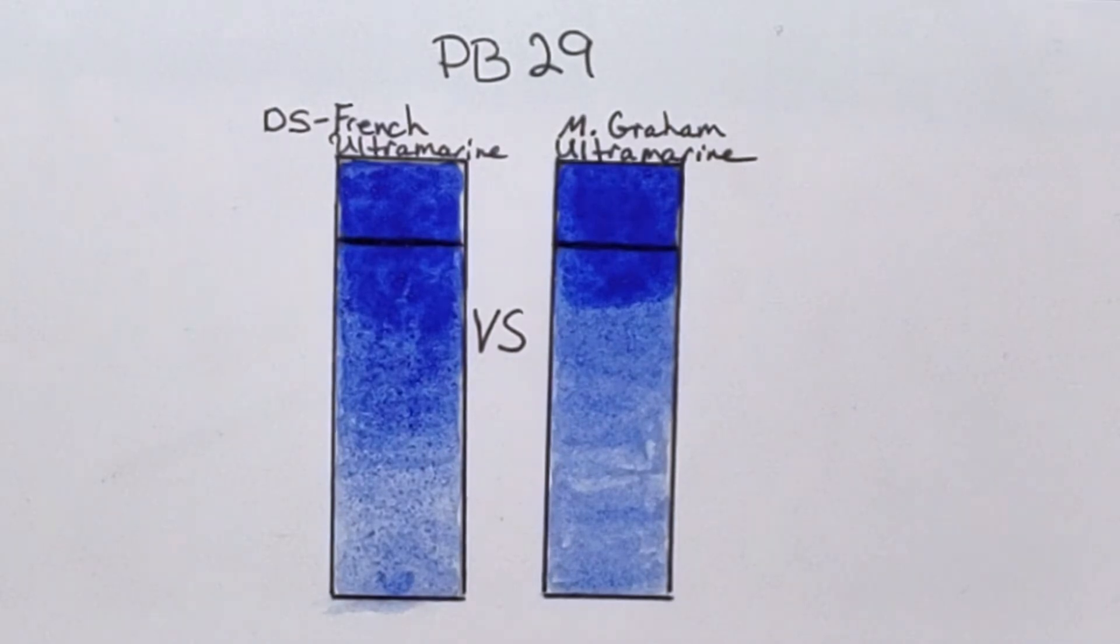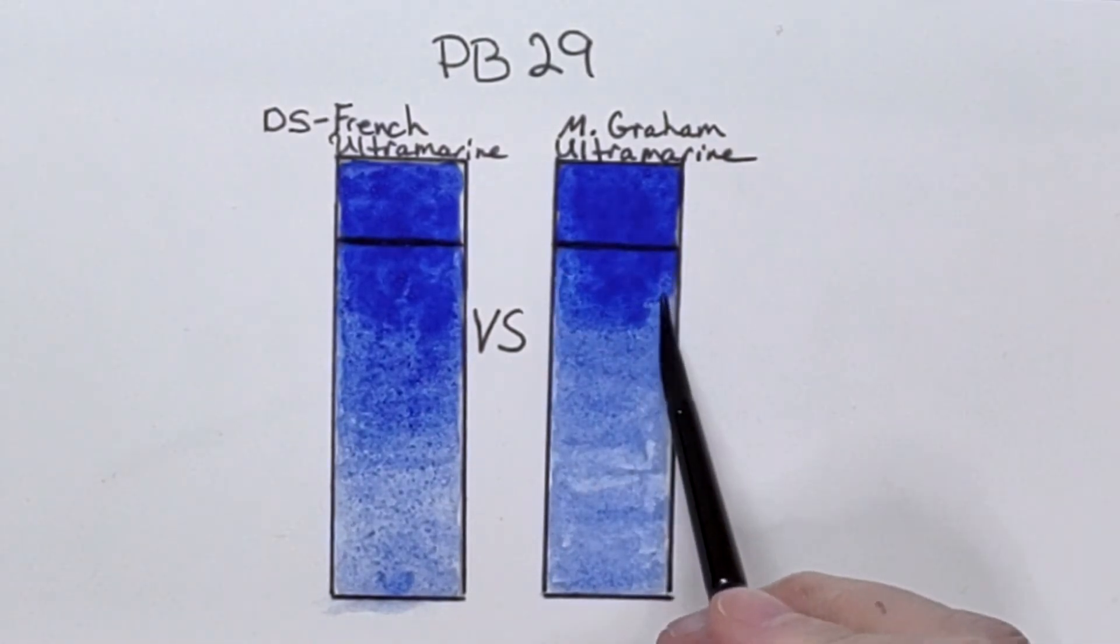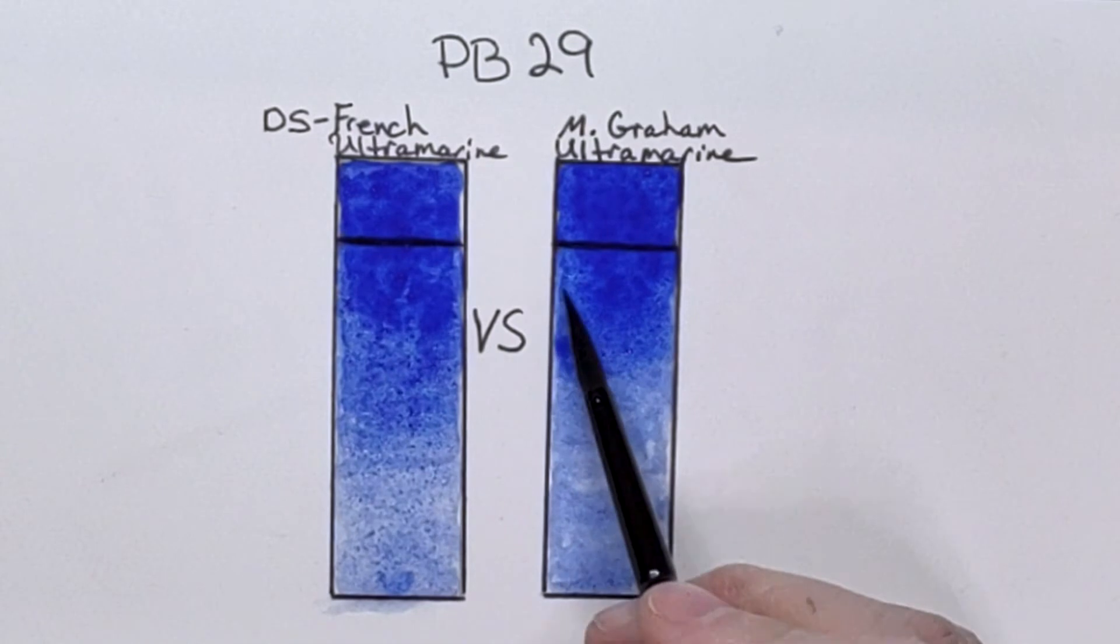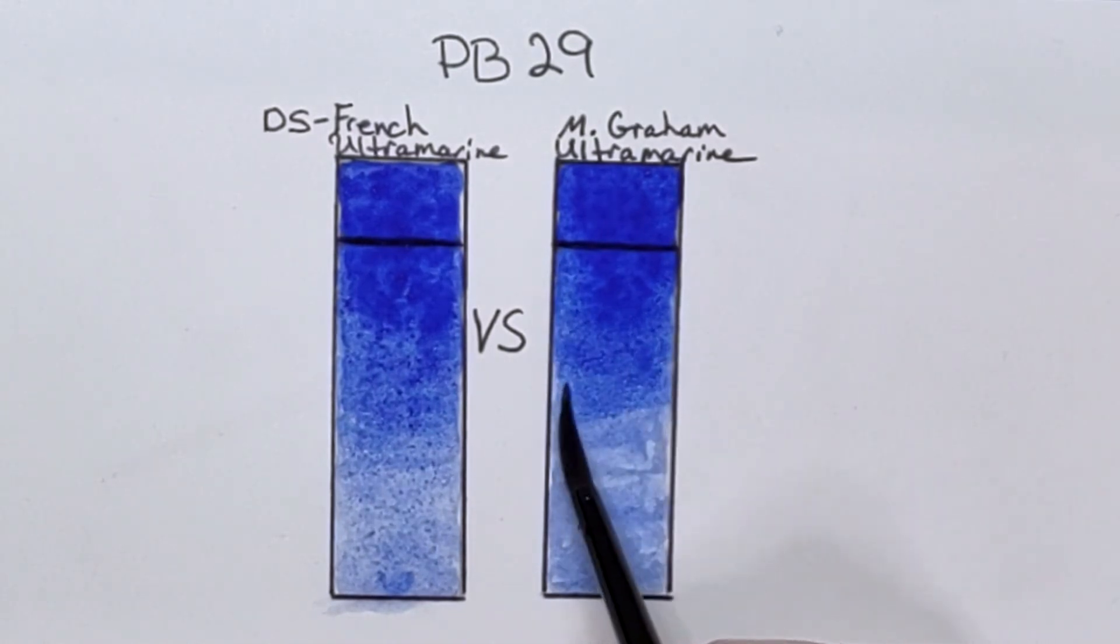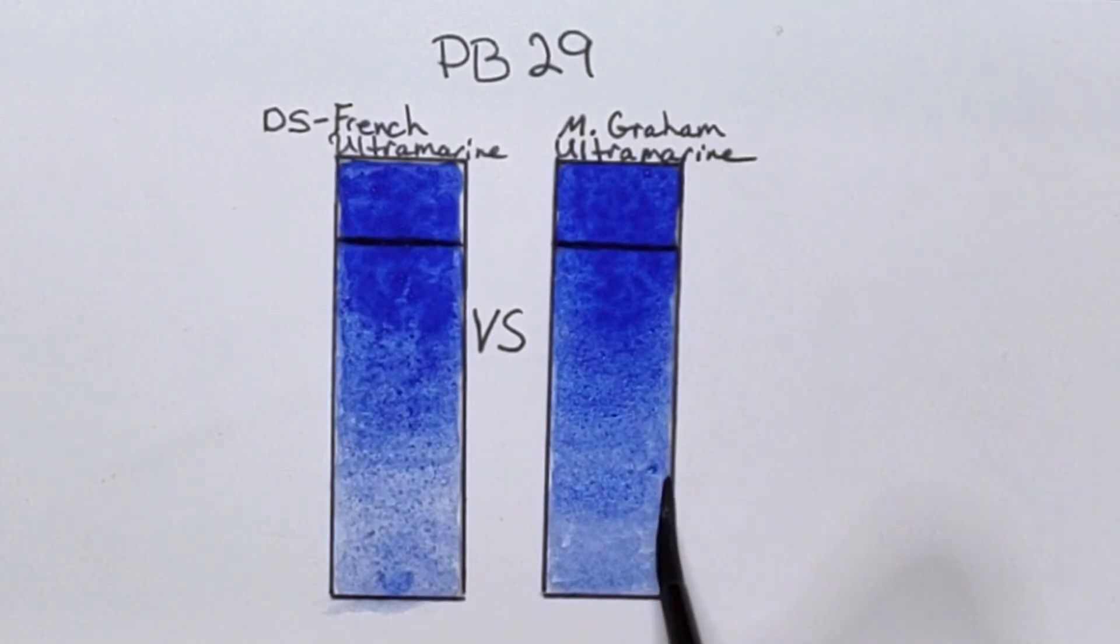Yeah, I can kind of tell it does just seem to have a little bit more movement to it, but it could just be my bias because I really do like my M. Graham paints. Not the best swatcher out there, but alright.